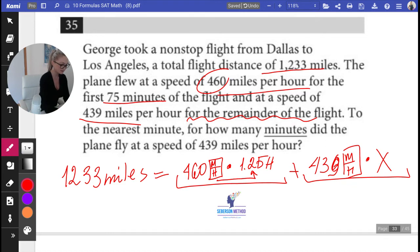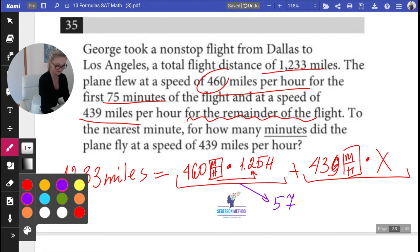Now let's do 1.25 times 460. This here gives us 575 miles, because hours and hours they cancel out. So this gives us 575 miles.